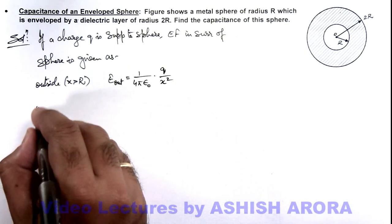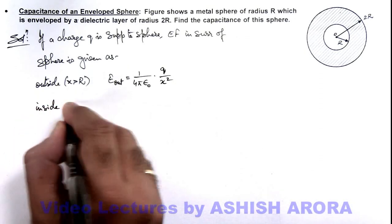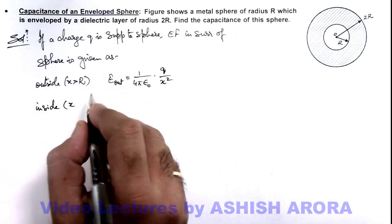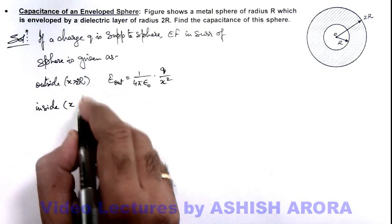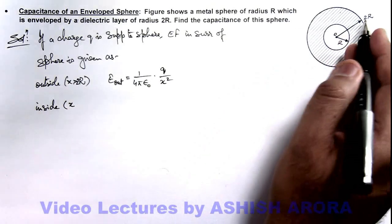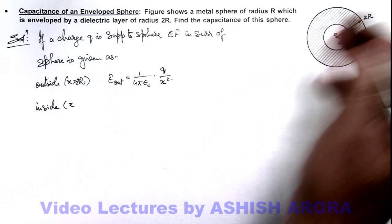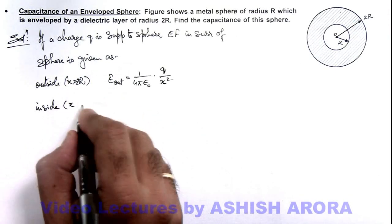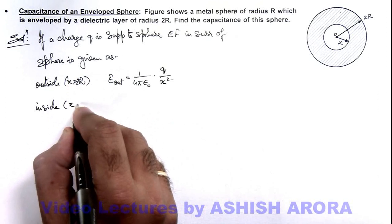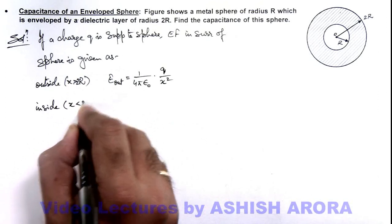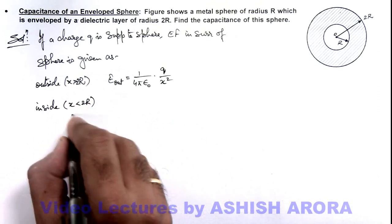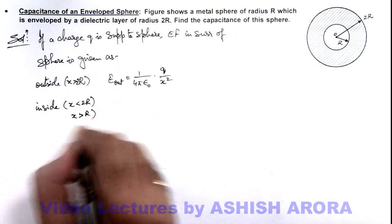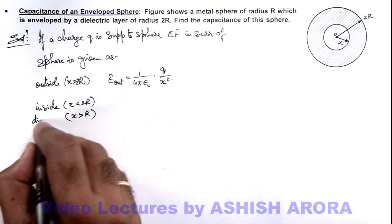And if we calculate at an inside region, that is x greater than 2R. Because outside means we are talking about outside the layer of dielectric. And if we talk about x is less than 2R but certainly we are taking a position which is greater than R, this inside dielectric we are talking about.